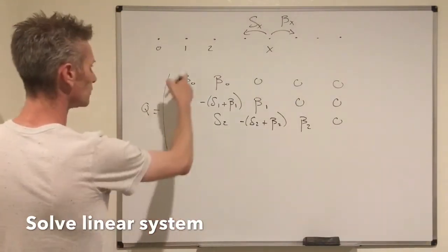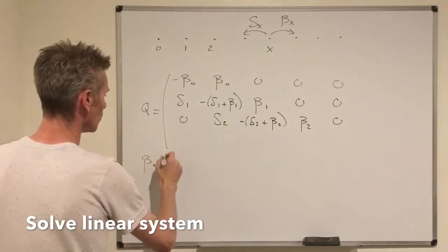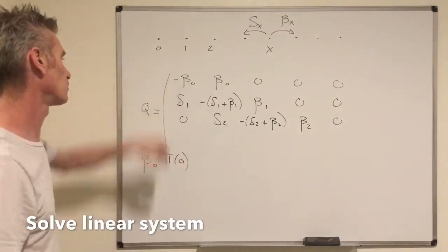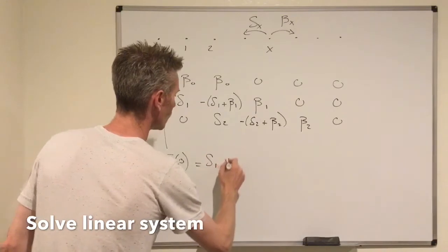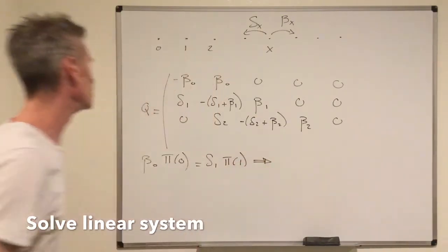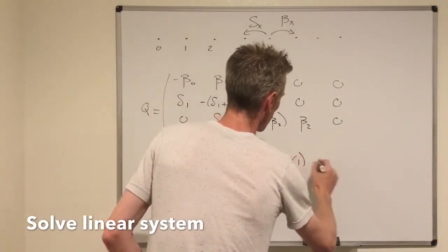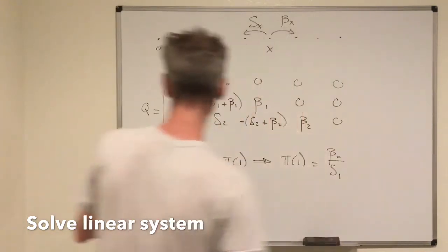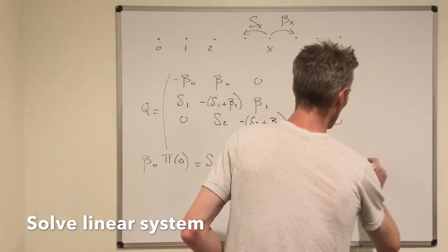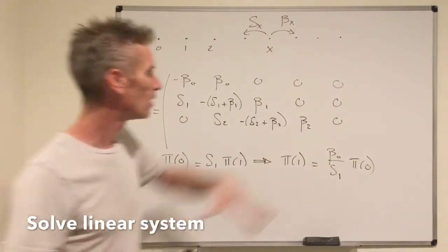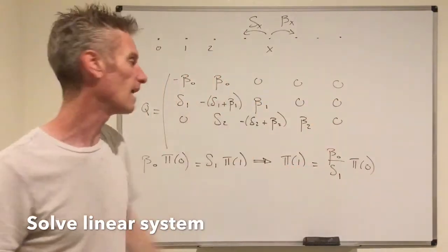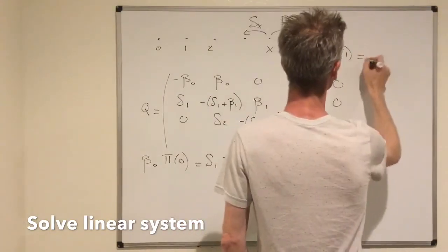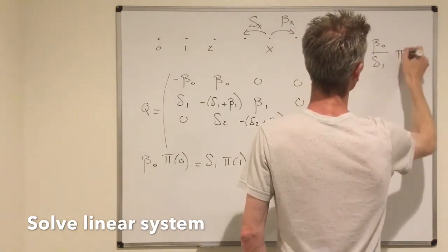Let's find the system. From the first column we get β₀ · π₀ = δ₁ · π₁. So we deduce that π₁ = (β₀ / δ₁) · π₀. The goal is to express π_x in general as a constant times π₀ for all x.